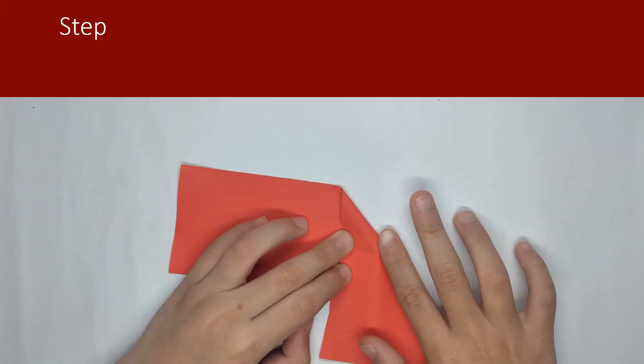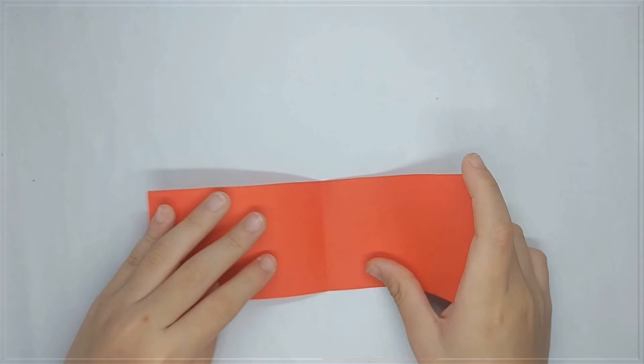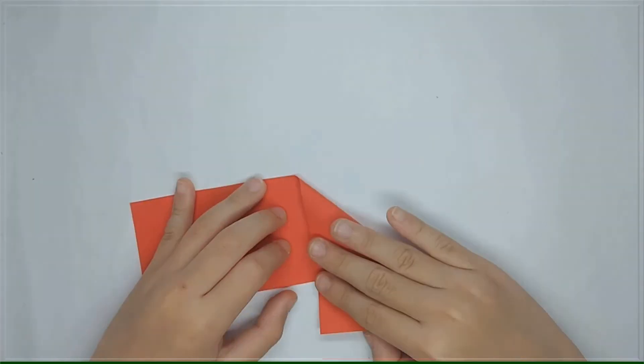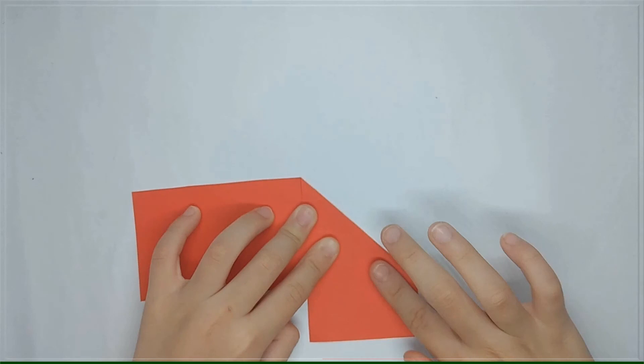Step 3. Fold down the top right corner along the axis of symmetry. Here. Fold down the top right corner along the axis of symmetry so that the upper edge lies along the crease formed by the center fold.